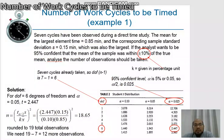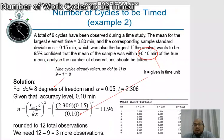We look at another example. A total of 9 cycles have been observed during a time study. The mean, the X bar, is 0.80 minutes, and the standard deviation is 0.15 minutes. If the analyst wants to be 95% confidence level that the mean of the sample was within plus minus 0.10 minutes—so in the previous example, example 1, the K value was given in percentage, but now the K is given in time unit.